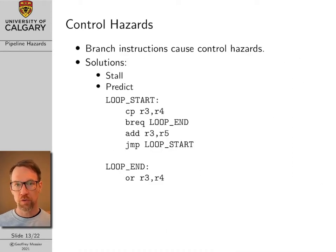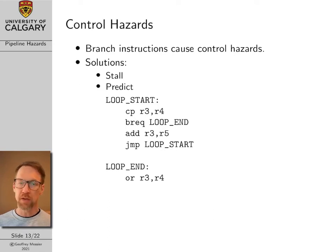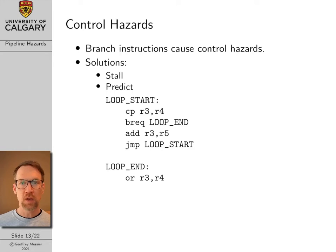The next thing to talk about is control hazards. Control hazards are a little bit different from data hazards — they're caused by branch instructions. A data hazard occurs when some data our command needs is being processed by an earlier instruction that isn't finished yet. Control hazards are caused by the uncertainty regarding what happens after a branch statement.